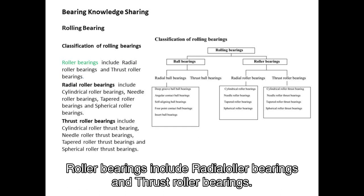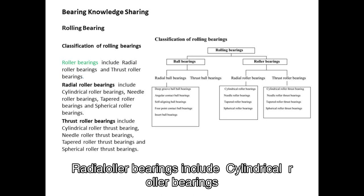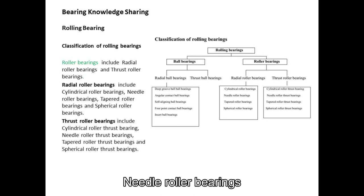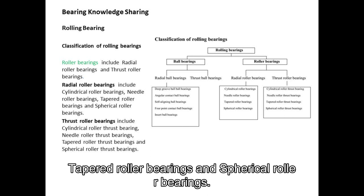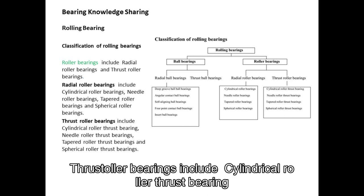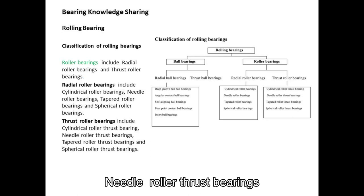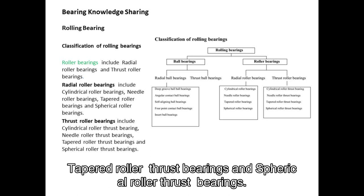Roller bearings include radial roller bearings and thrust roller bearings. Radial roller bearings include cylindrical roller bearings, needle roller bearings, tapered roller bearings, and spherical roller bearings. Thrust roller bearings include cylindrical roller thrust bearings, needle roller thrust bearings, tapered roller thrust bearings, and spherical roller thrust bearings.